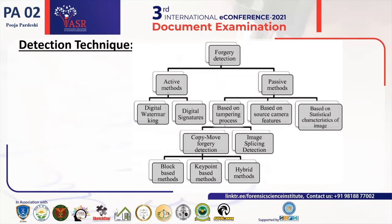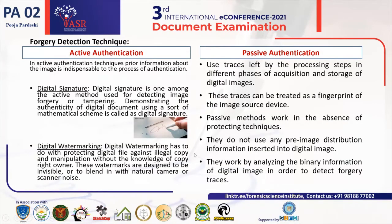Forgery detection techniques have two main methods: the active method and the passive method. Digital watermarking and digital signature fall under the active method. Based on tampering process, based on source camera feature, and based on statistical characteristics of image fall under the passive method. Copy-move forgery detection and image splicing detection are under the tampering process. Block-based method, keypoint-based method, and hybrid method are the three methods of copy-move forgery detection.